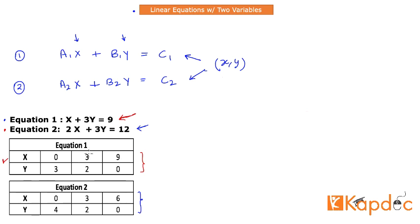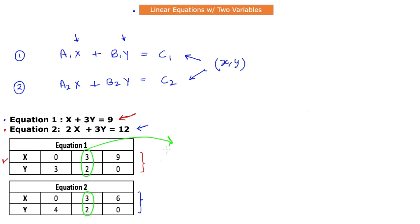Of course, when we talk about these solutions individually, we are not just limited to three values — there are more than three solutions. But the key point is, if you look at just one of those pairs — say, for Equation 1, the pair (3, 2) where x is 3 and y is 2 — you can find exactly the same pair that also satisfies Equation 2. And that is our entire objective: what is that one unique pair of values of x and y that satisfies both equations simultaneously? When you obtain such a pair, you can say that there exists a unique solution.